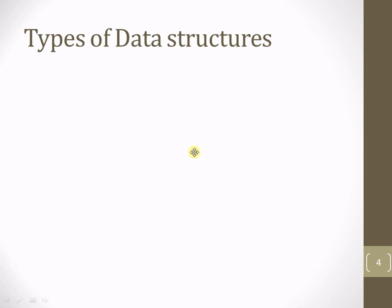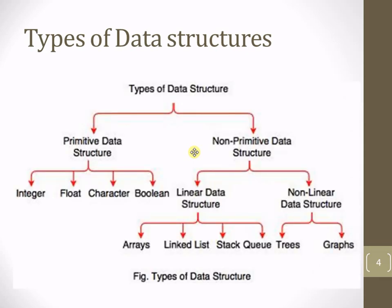First, I would like you to go through the different types of data structures. This diagram explains the types of data structures. Mainly there are two types: primitive data structures and non-primitive data structures. Primitive data structures are those which we cannot derive — they are already available. Non-primitive data structures are derived from primitive ones. Non-primitive data structures are again of two types: linear data structures and non-linear data structures.